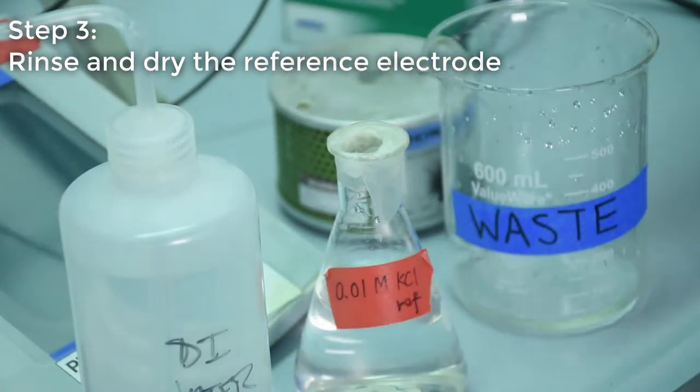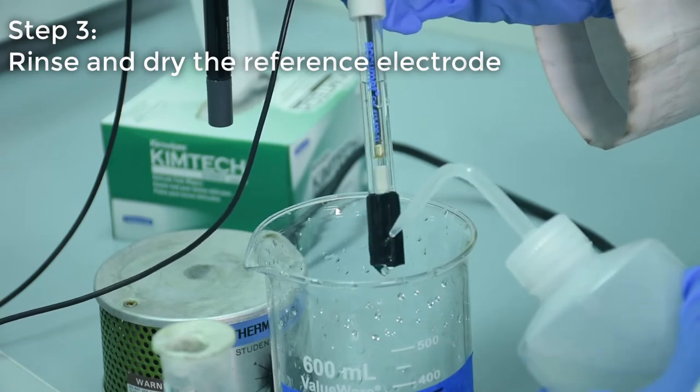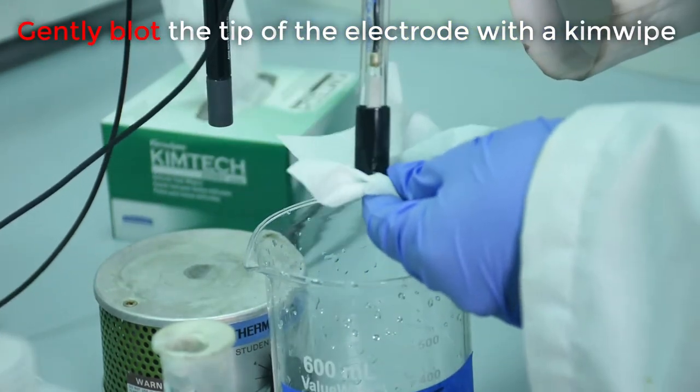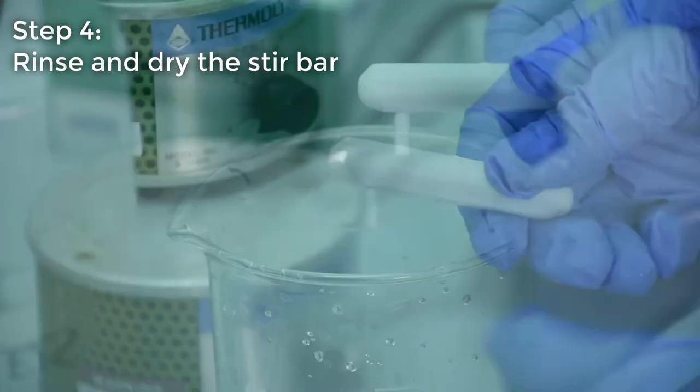Following the same rinsing step, rinse the reference electrode with deionized water and gently blot the tip with a chem wipe. Also, rinse and dry the stir bar.